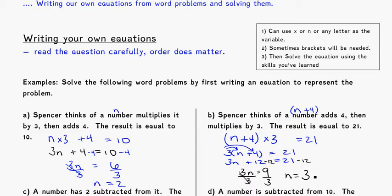The difference between these two problems was the order of operations. Same numbers, but in the first problem Spencer multiplies by 3 first and then adds 4 — so no brackets needed, since only 3N is being multiplied. In the second case, he adds 4 first and then multiplies the whole quantity N plus 4 by 3, so brackets are required.